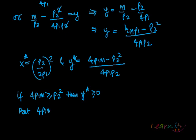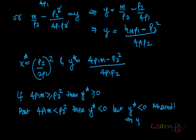But if 4P1m is less than P2 squared, then y star is negative. But y star negative is absurd, and hence this would imply that actually in this case y star is equal to zero.